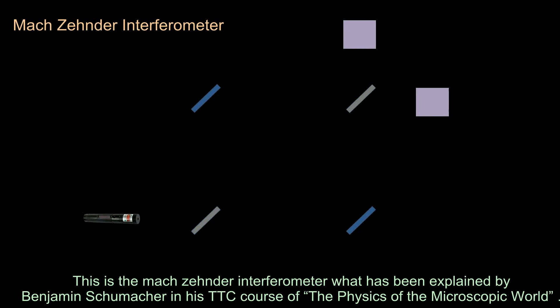This is the Mach-Zehnder Interferometer, as explained by Benjamin Schumacher in his TTC course, The Physics of the Microscopic World.